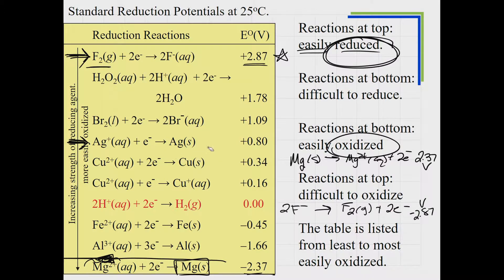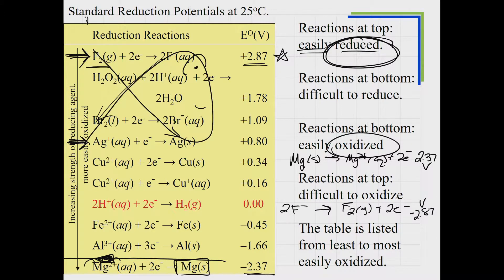One way to visualize this is to draw a fish always swimming to the right. The reactants go down on one side and products go down on the other. So if I pick two reactions—for example Br2 above and Ag below—the overall reaction would be: F2 + Ag(s) → 2F⁻ + Ag⁺, making sure the number of electrons gained and lost are equal. The fish method tells you who the reactants and products are for the overall reaction.